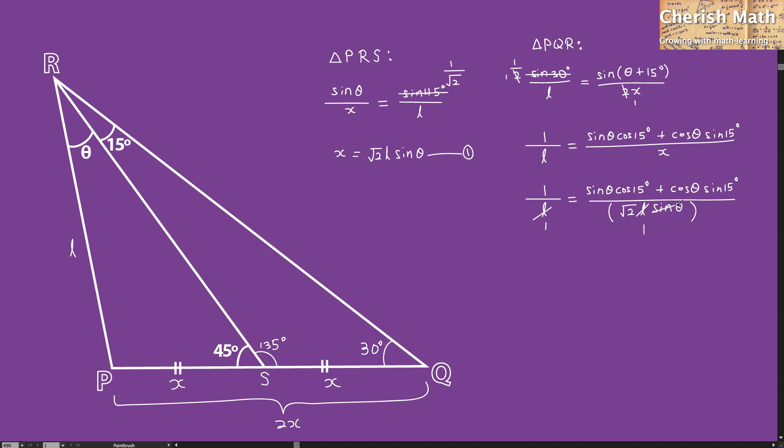For sine theta, this is simplified. Cos theta divided by sine theta gives me cot theta.